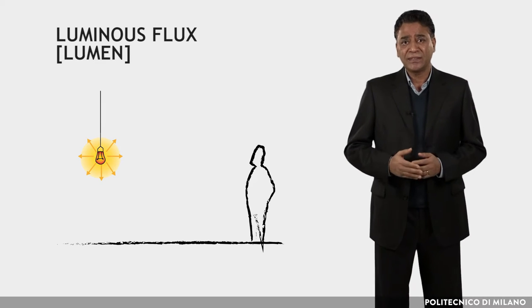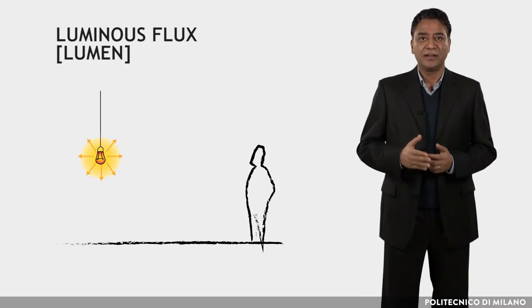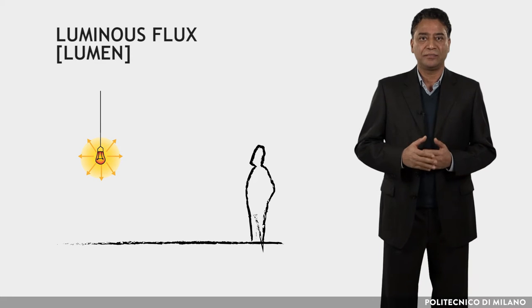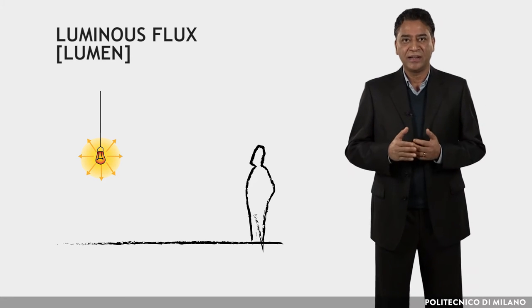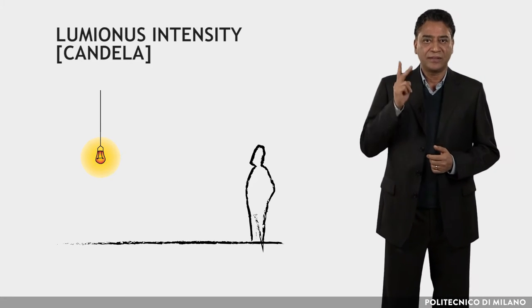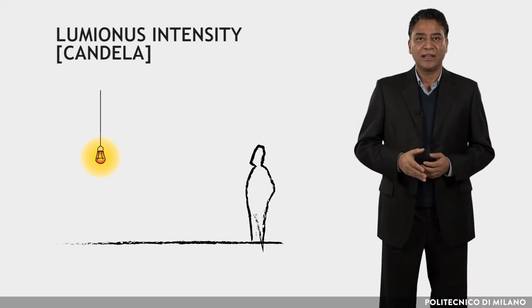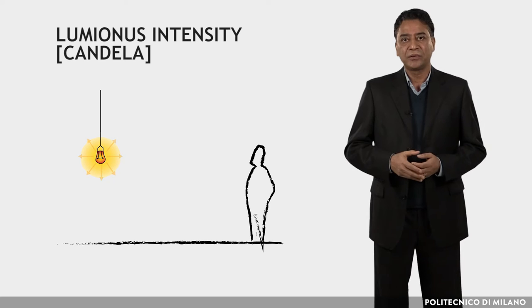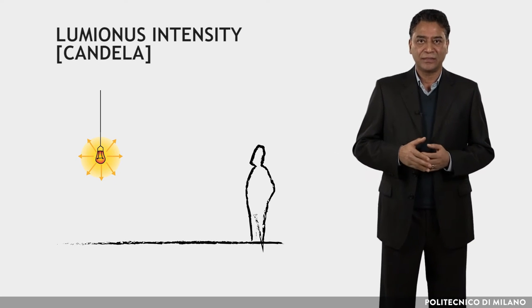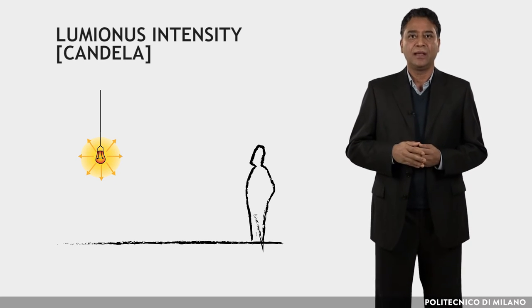The second one is luminous intensity. The unit is candela. A light source emits its luminous flux usually in different directions and at different intensities. The intensity of light radiated in a given direction is defined as luminous intensity.